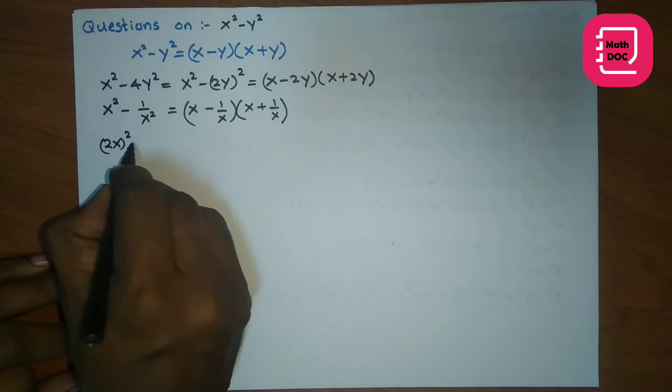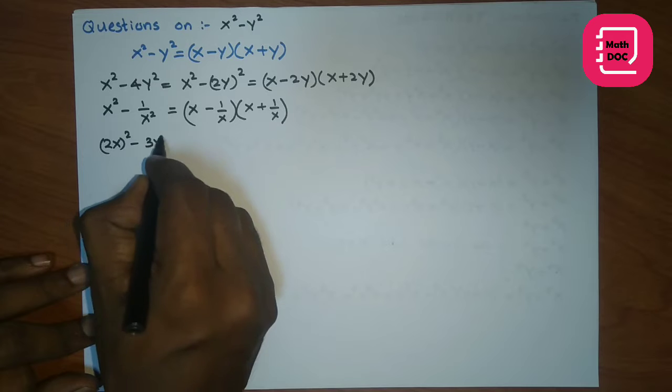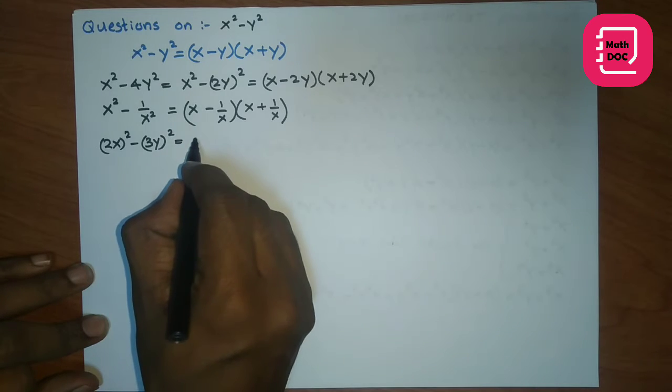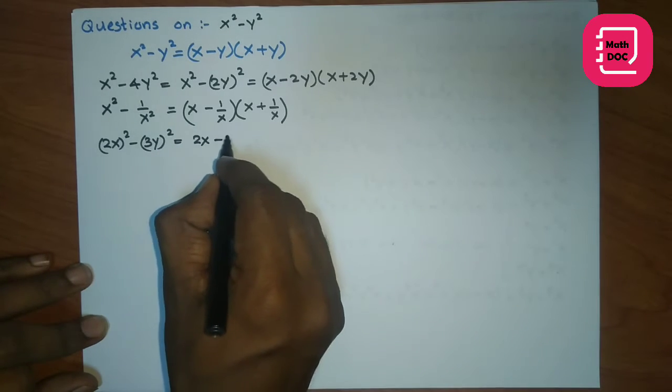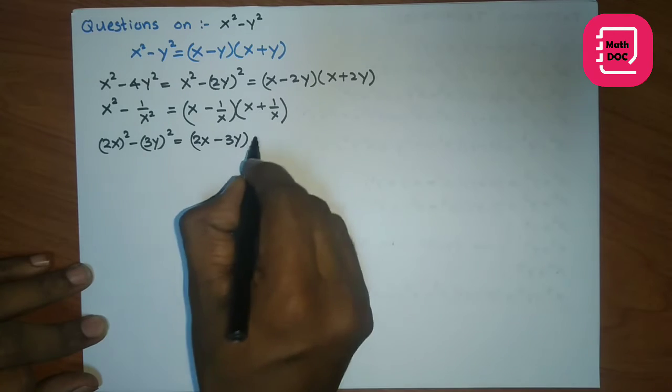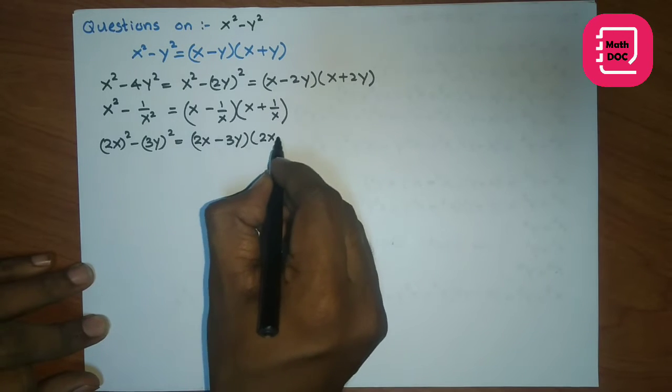Then 2x-squared minus 3y-squared. The factors here are 2x minus 3y and 2x plus 3y.